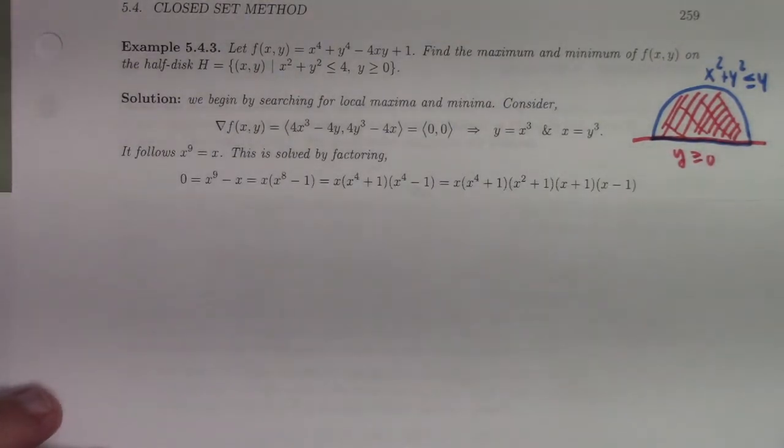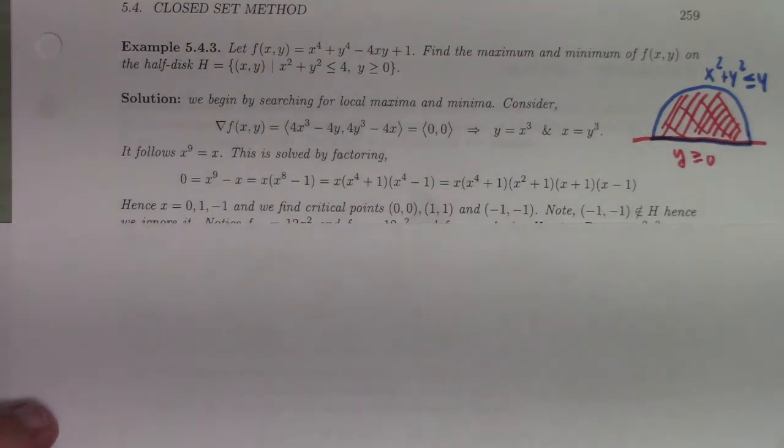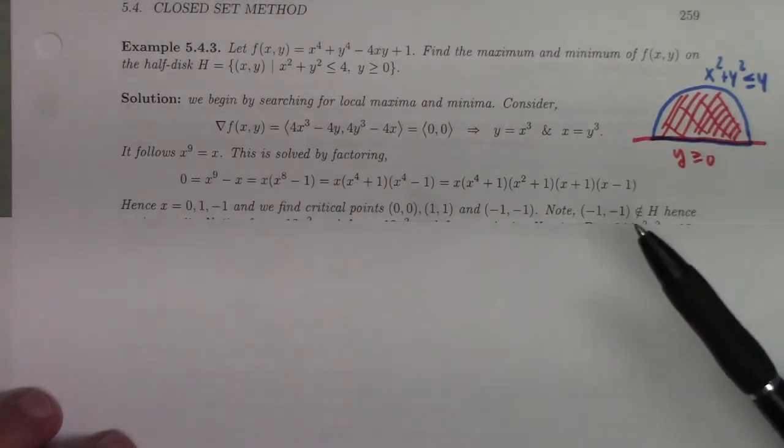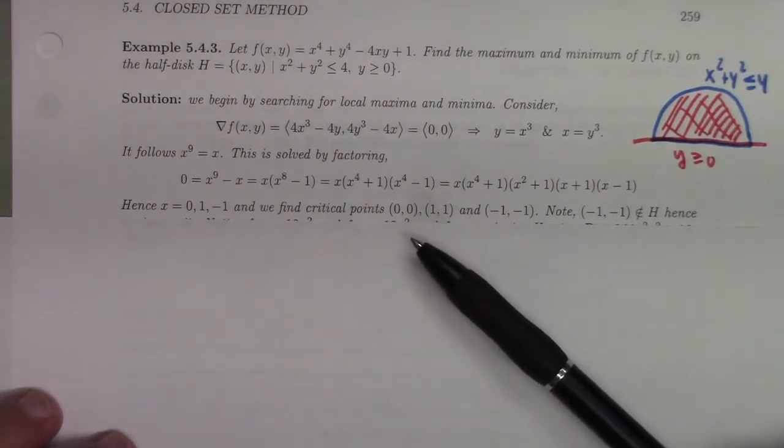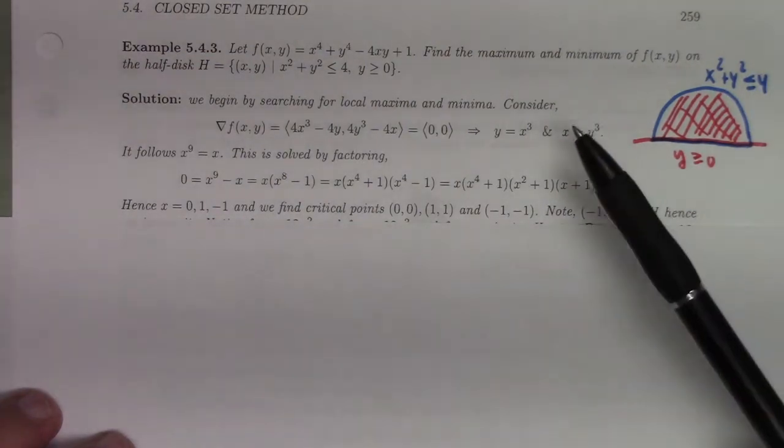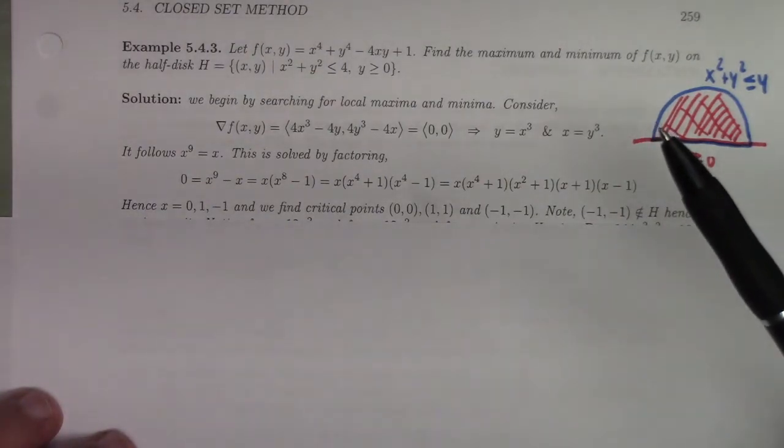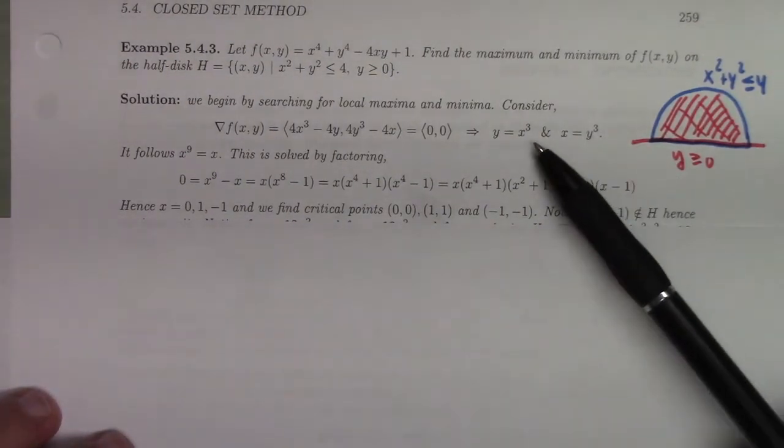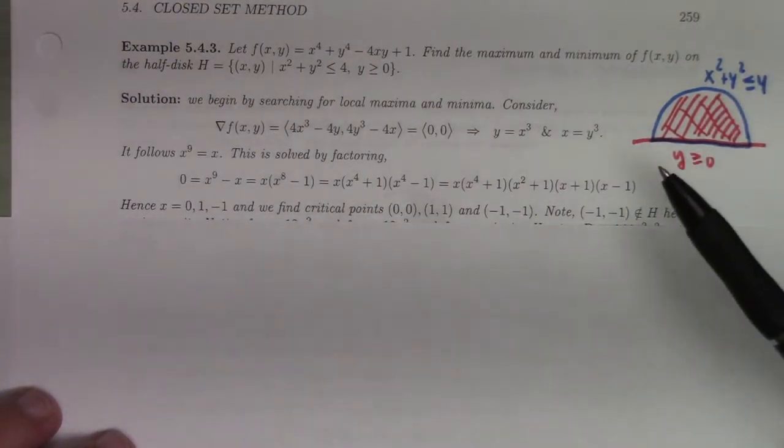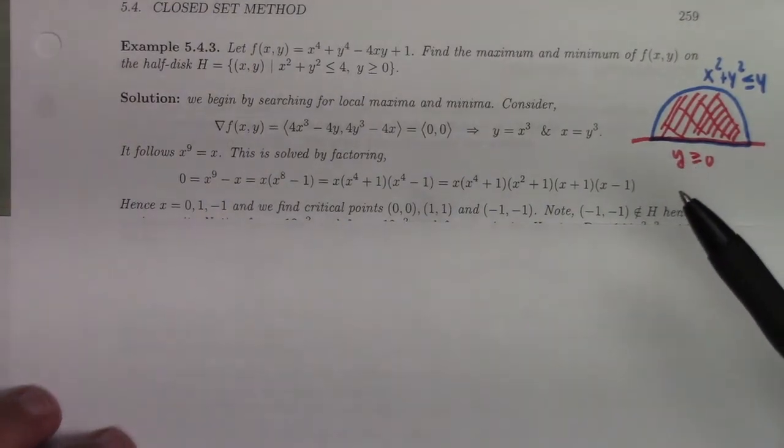I calculate the gradient, set it equal to 0. I end up with x to the 9th equal to x, interesting. You can solve that by factoring and you end up with solutions—looks like we only get 1 and minus 1 as solutions, oh and 0. But remember y equals x cubed, so once I know x equals 0, 1 or minus 1, that gives me y equals 0, 1 or minus 1 as well, because the cube takes 0 to 0, 1 to 1, and minus 1 to minus 1. So the cube has three fixed points: 0, 1, and minus 1.